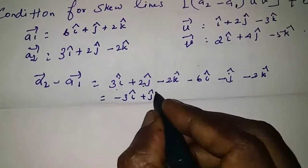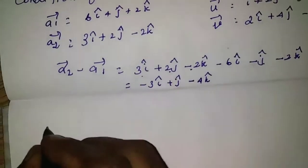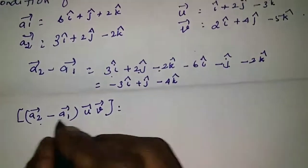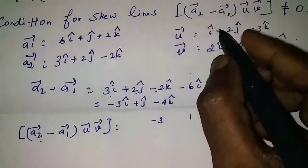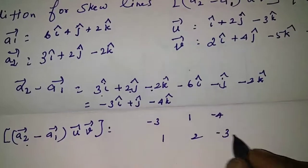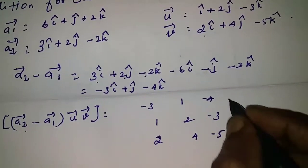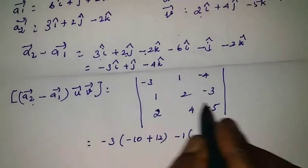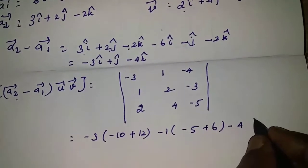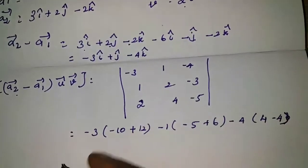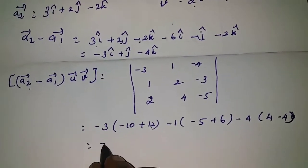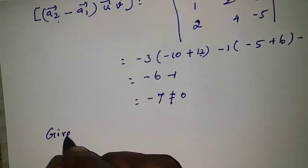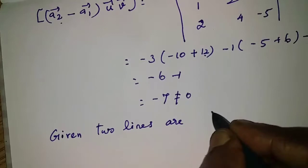Continuing: 2j minus j gives plus j-cap, and minus 2k minus 2k gives minus 4k-cap. So a2 minus a1 equals minus 3i-cap plus j-cap minus 4k-cap. The scalar triple product of (a2 minus a1), u, v equals minus 7, which is not equal to 0. Therefore, the given two lines are skew lines.